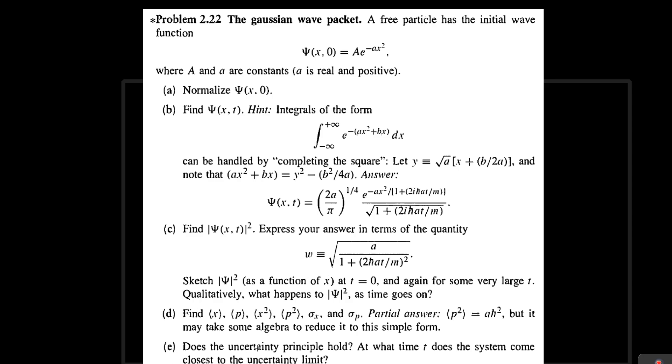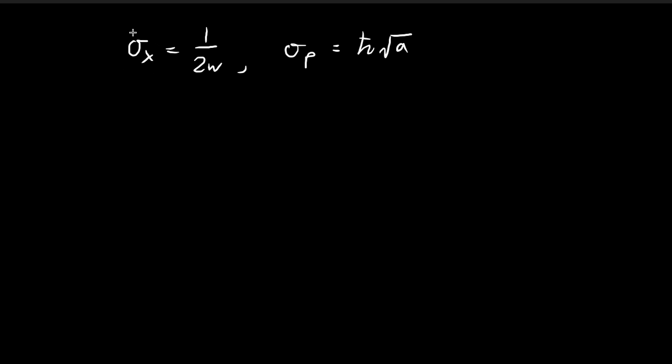Now we move on to part E, checking the uncertainty principle. Last time we found that the standard deviation of x equals this, and the standard deviation of momentum equals this.